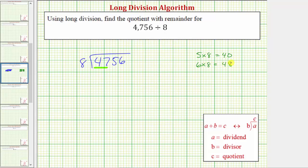notice how that's 48. 48 is greater than 47, so there are not 6 eighths in 47, but there are 5. So the first digit in the quotient is 5.